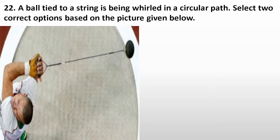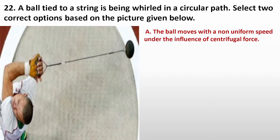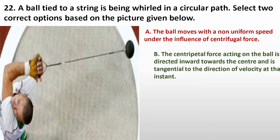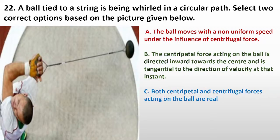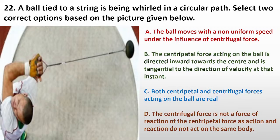Question twenty-two. A ball tied to a string is being whirled in a circular path. Select two correct options. A, the ball moves with non-uniform speed under the influence of centrifugal force. B, the centripetal force acting on the ball is directed inwards towards the centre and is tangential to the direction of velocity. C, both centripetal and centrifugal forces acting on the ball are real. D, the centrifugal force is not a force of reaction of the centripetal force as action and reaction do not act on the same body.